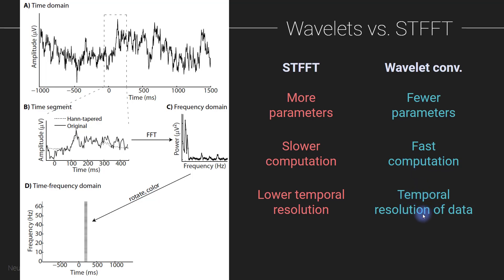With wavelet convolution, you retain the temporal resolution of the data, because convolution retains the temporal resolution of the data. With the short-time Fourier transform, you typically have a lower temporal resolution, because the time window for each individual FFT gets moved along by perhaps 100 or even 200 milliseconds. So in practice, the temporal resolution ends up quite a bit lower.